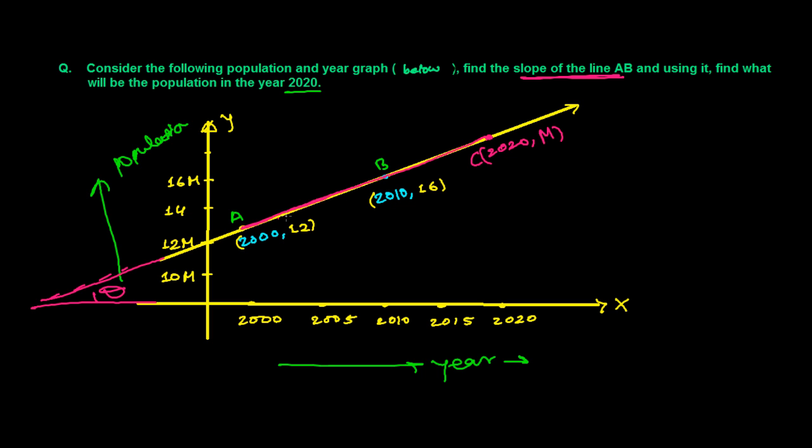It means, since the angle, all this line segment AB, line segment AC, line segment BC, every line segment has the same angle of inclination. It means every line segment will have the same slope. The slope of AB will be the slope of BC and will be the slope of AC. By equating those things, we can easily find out the population in the year 2020.